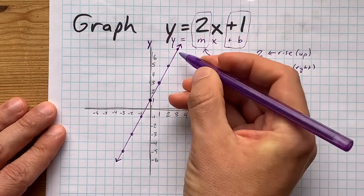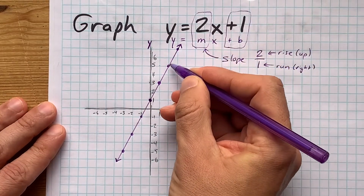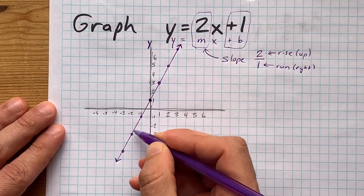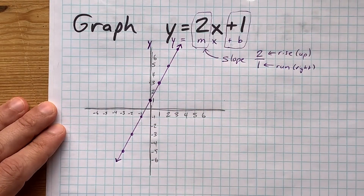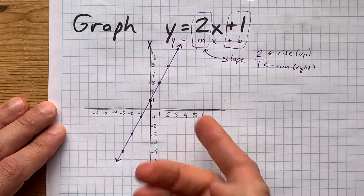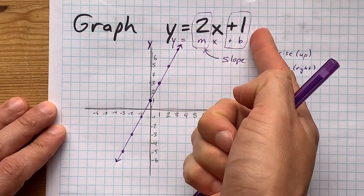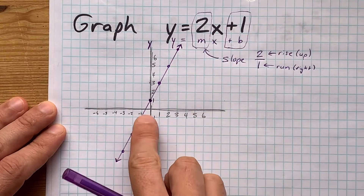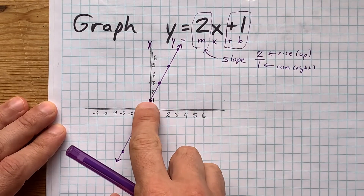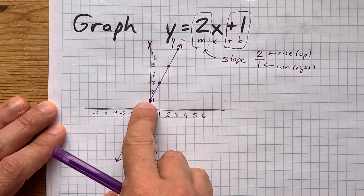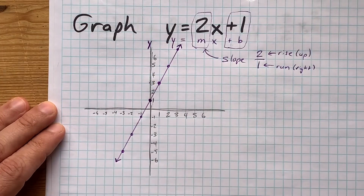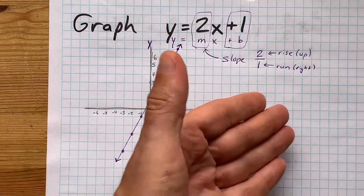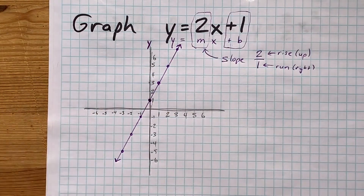I did it right, and that's why the straight line went through all of the points exactly. 2x plus 1 starts at 1 on the y-axis and has a slope of positive 2. Thanks for being with me, and best of luck.